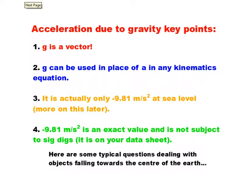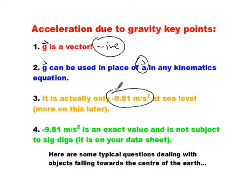A couple of things to keep in mind. Acceleration due to gravity, it's a vector. That means it can have a positive or negative value. In this case, it always has a negative value. Important to remember, your problems won't work out unless you include that. The acceleration due to gravity can be used in place of acceleration in any kinematics formula. As long as the object is falling near the Earth's gravitational field, it works. It's actually not 9.81 meters per second squared absolutely everywhere, just at sea level. More on that later on. And it's an exact value, which means it doesn't count for sig digs. You don't worry about this for sig digs or anything that comes off your formula sheet.